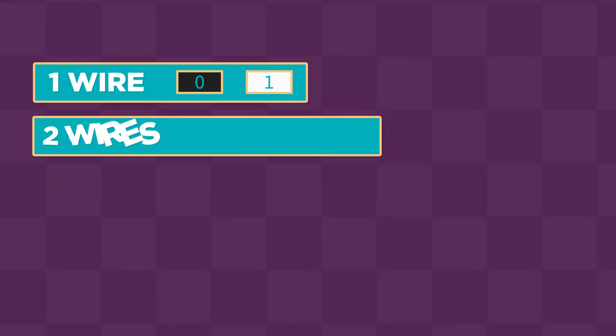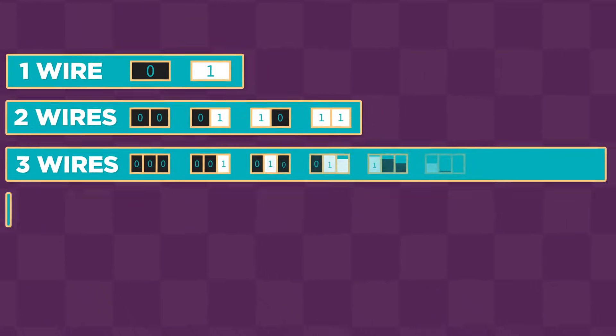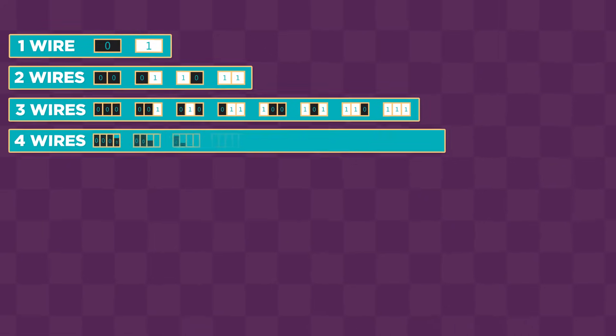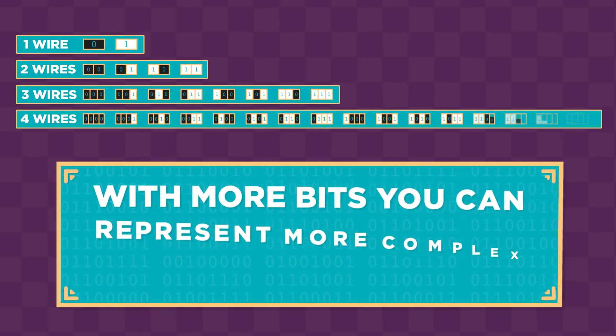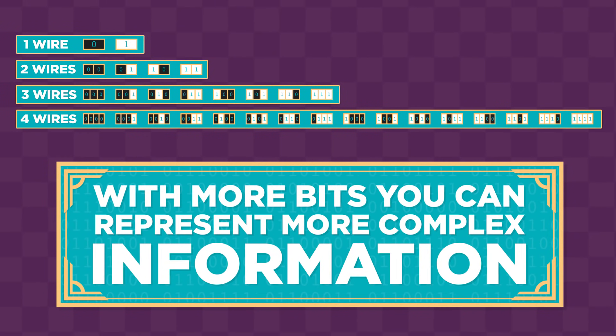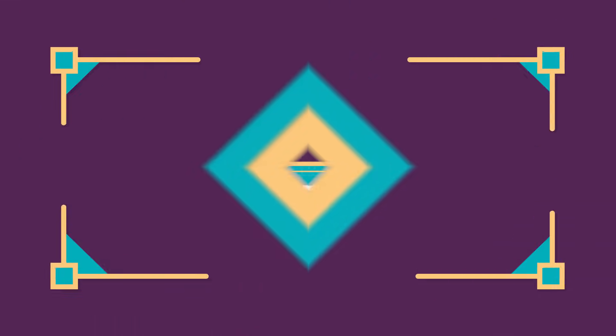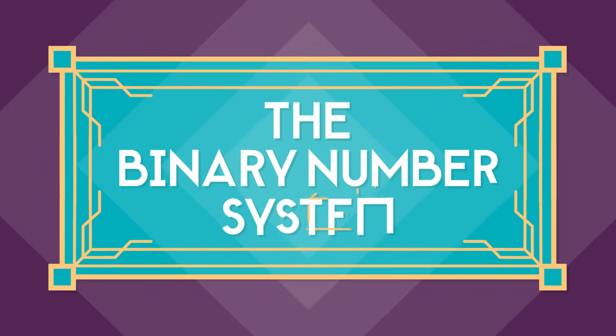If you use more wires, you get more bits — more ones and zeros. With more bits, you can represent more complex information. But to understand that, we need to learn about something called the binary number system.